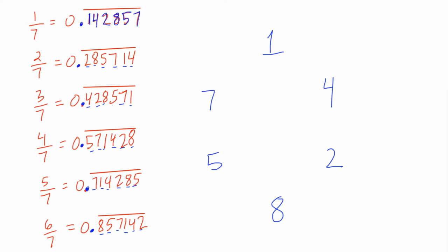So in the first decimal expansion, 1, 4, 2, 8, 5, 7, if you look at our circle, it means we start here at 1, and then we go around: 1, 4, 2, 8, 5, 7. That's the first one.